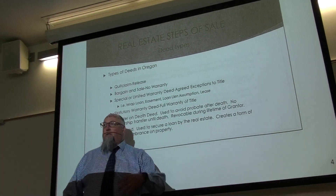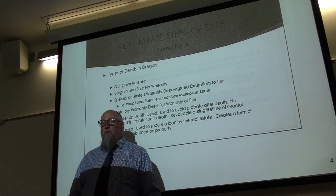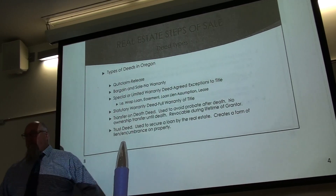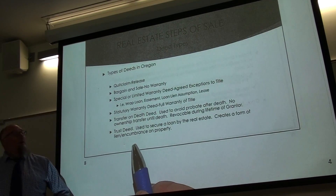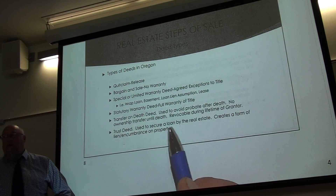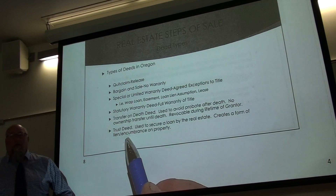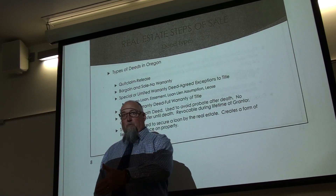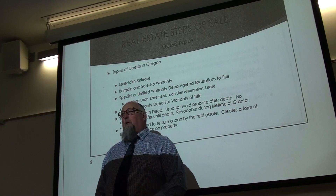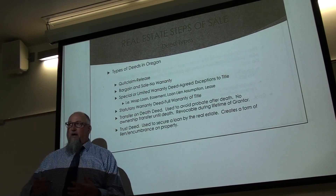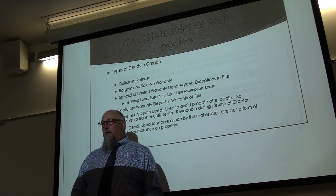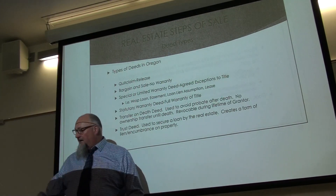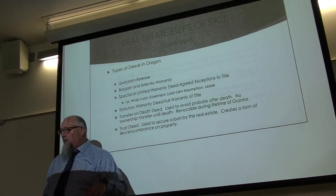Transfer on death deeds are revocable — as long as you're alive you can change your mind and revoke it; your children have no rights to the property whatsoever until you die. A trust deed, finally, is the document a lender like a bank uses to secure the loan against the real estate. It creates a lien or encumbrance on the property, meaning the bank must be paid when you sell. To clear that lien, a deed of reconveyance must be filed. If not paid, the lender can foreclose.